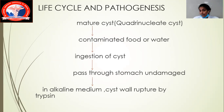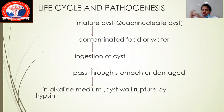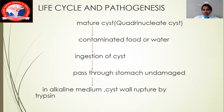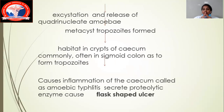In the life cycle and pathogenesis: there is a mature cyst, also called a quadrinucleated cyst, which travels through food or water. If you ingest contaminated water or food containing the mature cyst, it passes through the stomach and enters an alkaline medium where it gets ruptured. After the rupture, there is a release and formation of metacystic trophozoites. The habitat is most commonly in the crypts of the cecum where they go and start inhabiting, and also in the sigmoid colon.